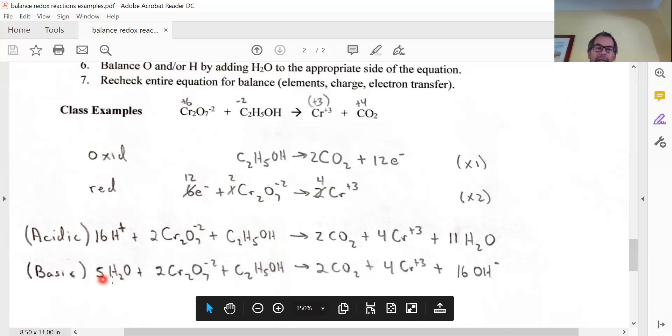So if I put five H2Os, I got 10 hydrogens plus six would be 16 hydrogens, which match up with these 16 hydrogens.